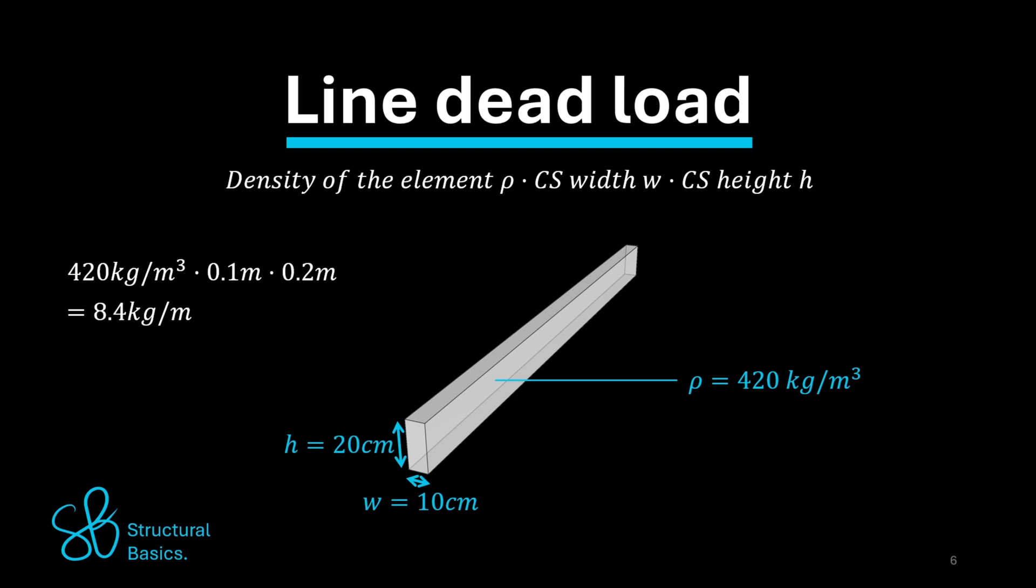As for the area load, the line load also has to be transferred from kilogram to kilonewton. So 8.4 kg per meter equals 0.08 kilonewton per meter.